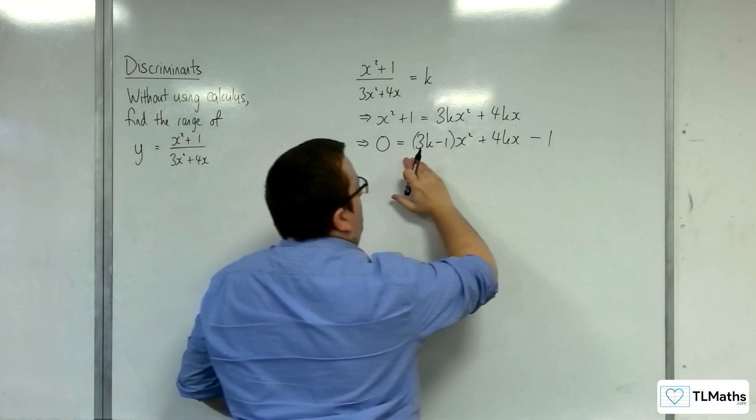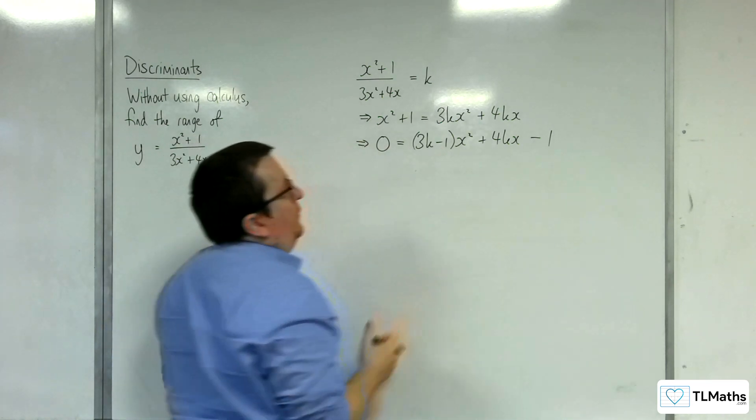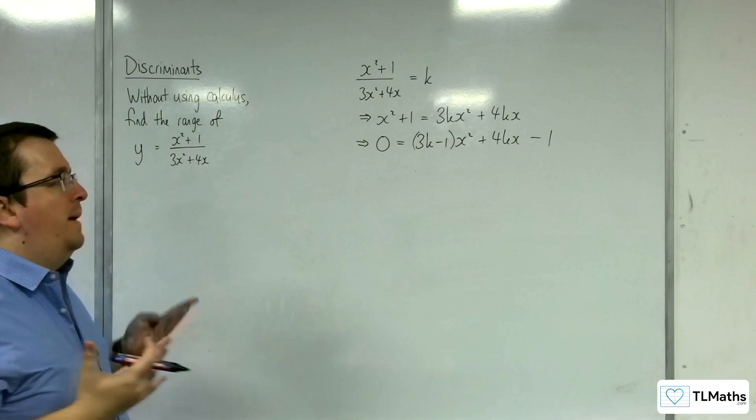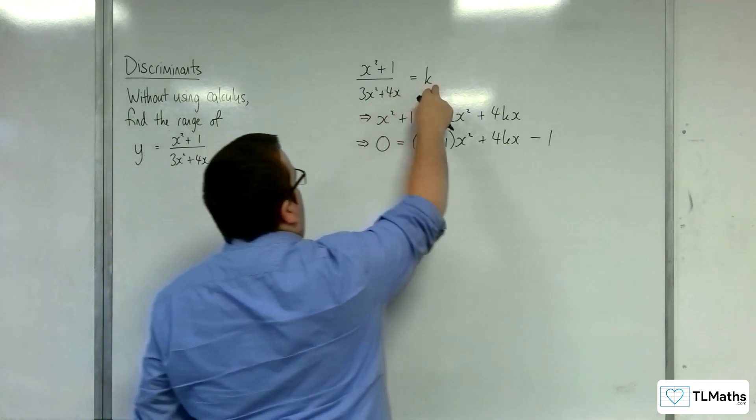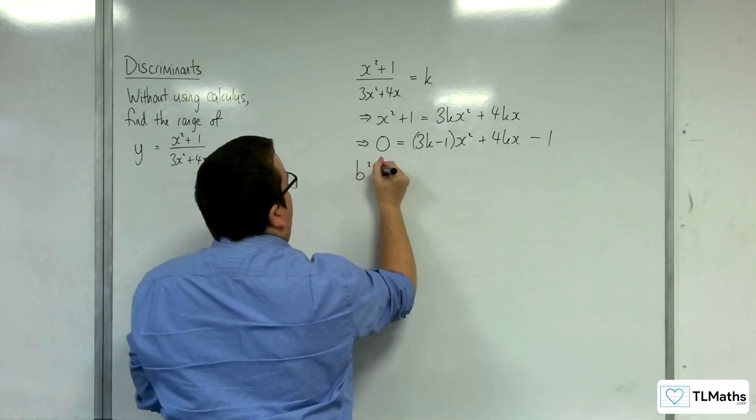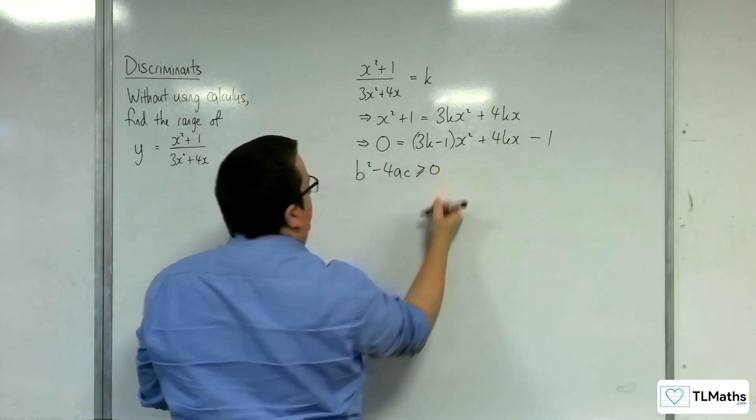Now, the discriminant of this would have to be greater than or equal to 0 in order for there to be intersections between this curve and this line. So we're going to need the discriminant to be greater than or equal to 0.